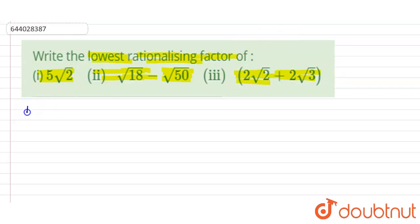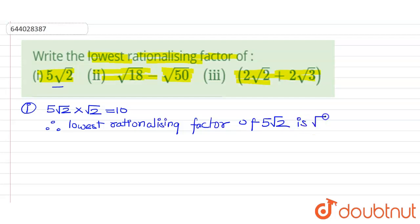Let us proceed. For the first one, 5 root 2, as we can see, if we multiply by root 2, then this will become 10. Therefore, the lowest rationalizing factor of 5 root 2 is root 2.